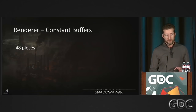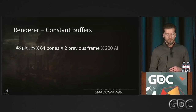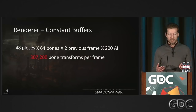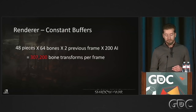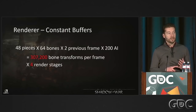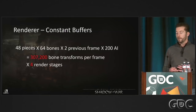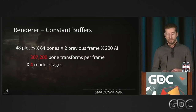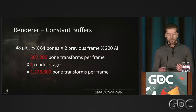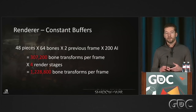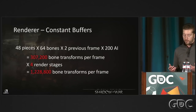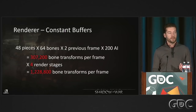More math: 48 pieces × 64 bones × 2 frames (current + previous) × 200 AI = about 307,000 bone transforms sent to the GPU every frame. But we also have four render stages — the G-buffer pass and three cascading shadow map passes — and each stage was regenerating the bones constant buffer every time it rendered a skeletal model. Net result: 1.2 million bone transforms per frame. Since bone transforms consist of two vec4s (position + rotation quaternion), that's 2.4 million vec4s uploaded to the GPU every single frame.